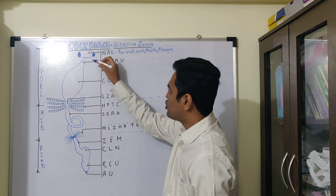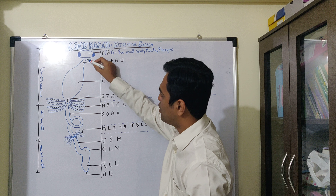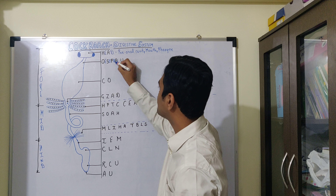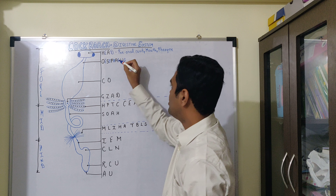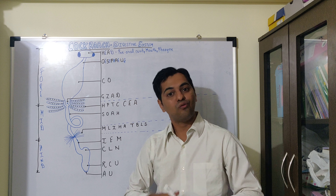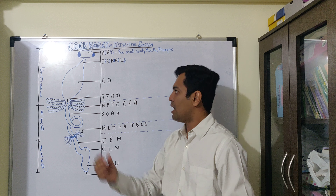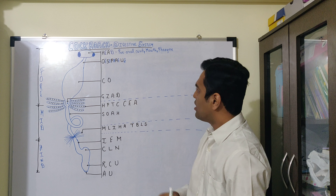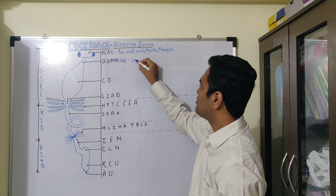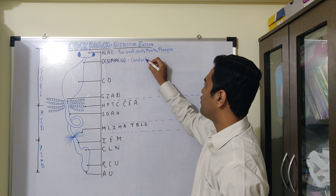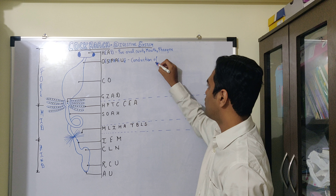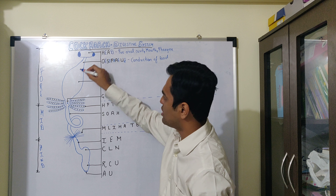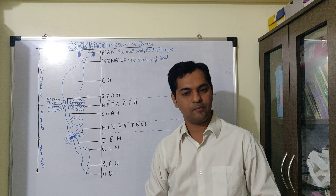Next is a short muscular passage of the foregut which is known as the esophagus. Just like the esophagus is the food pipe in humans, a similar tubular passage is present in cockroach as well. Through the esophagus, it mainly helps in conduction of food, and the food is transmitted to the next part of the foregut.